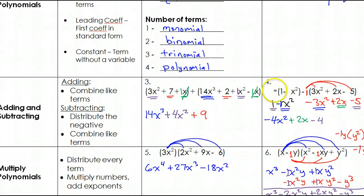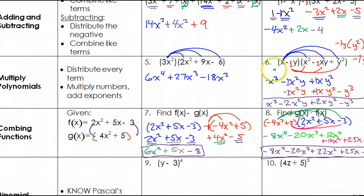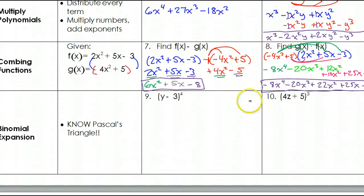Okay, we did some terminology, we added and subtracted, and we multiplied functions. But now, we're picking up with number nine and ten, binomial expansion, Pascal's Triangle.